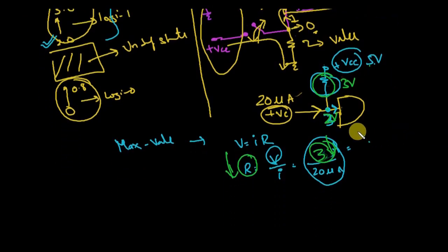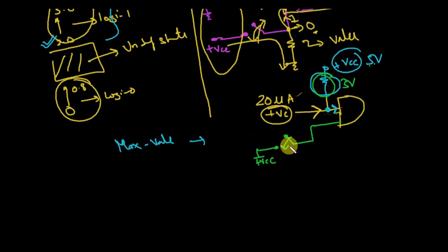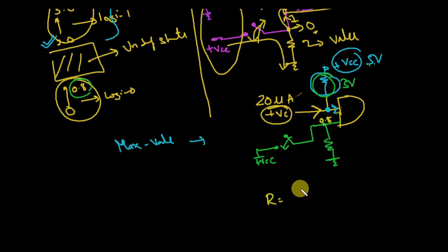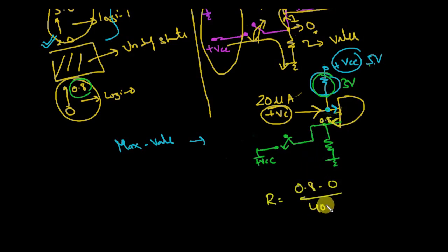For the pull-down resistor, the same logic applies. When the switch is closed I get VCC; when open, I want logic 0. I put a resistor to ground. To find its value, I want 0.8V or less at the input. Using Ohm's law: R = (0.8 - 0) / I. If the maximum sourcing current is 400 microamperes, then R = 0.8V / 400µA. The exact current value must be taken from the datasheet.